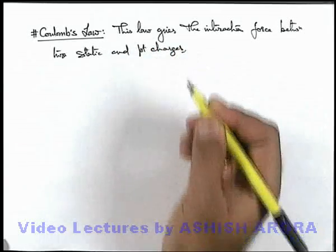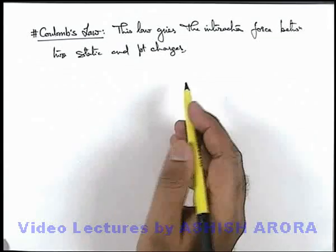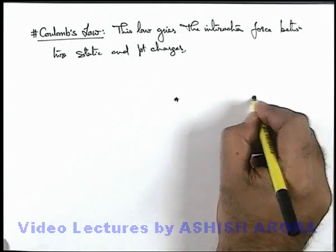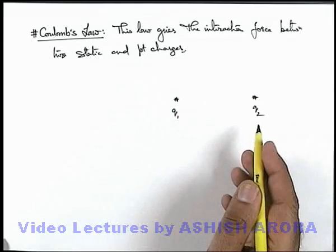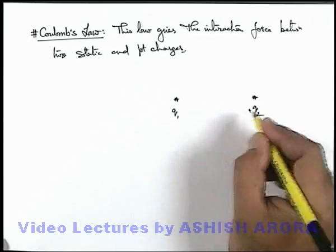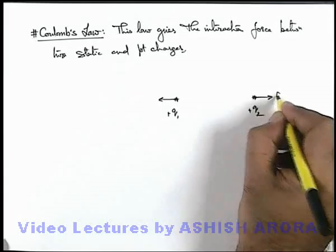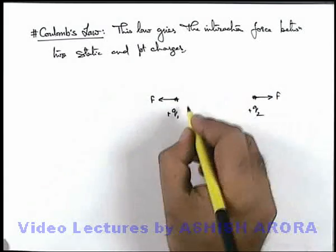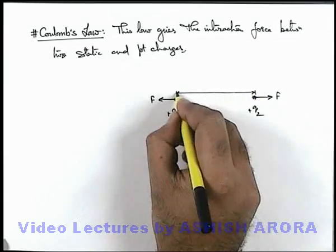This law is mainly used to find out the force between two static and point charges. If there are two point charges q1 and q2, we know that like charges repel each other and unlike charges attract each other. Say if these both are positive charges, these will repel each other with the force magnitude F. And say if the separation between the two charges is r.